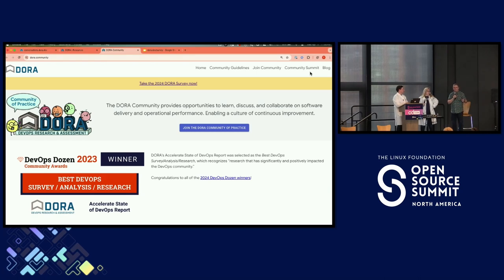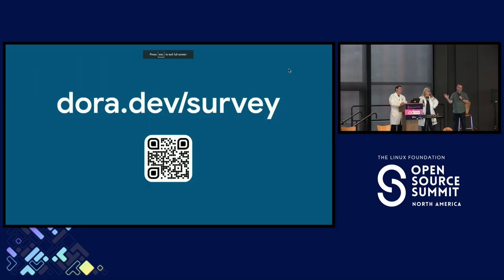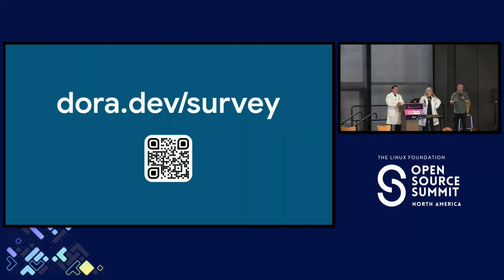We have some time today for questions, so if you have some questions, start thinking of them — build up that courage to raise your hand very soon. The way that we conduct this research every year is that we run an annual survey. We go out into the world and ask a number of different questions. It will take you about 15 minutes to take this survey. We really recommend that you take it because it gives you and your team a moment to reflect on some of those capabilities and practices that you're doing. Each year, we focus on different areas that you might be encountering in your own daily work.